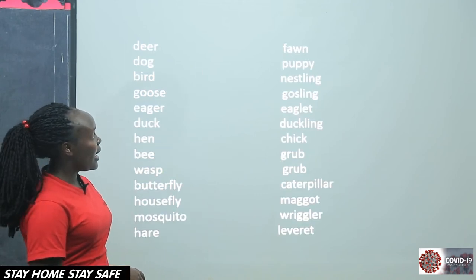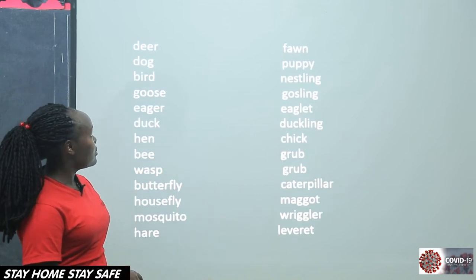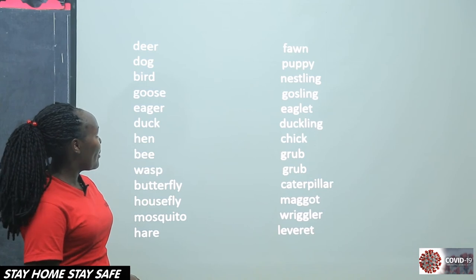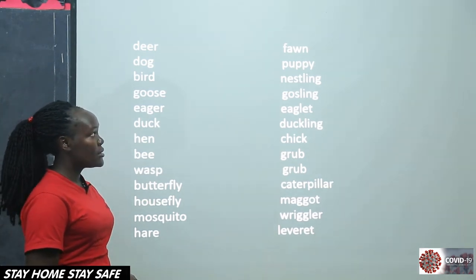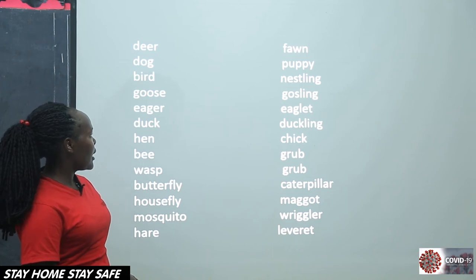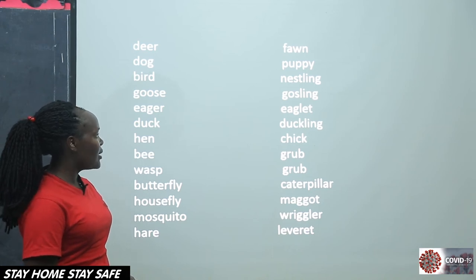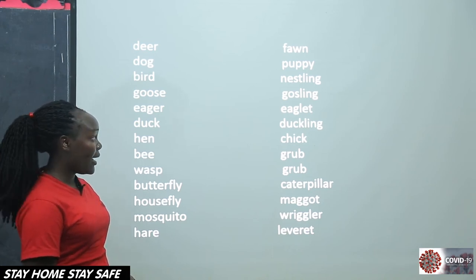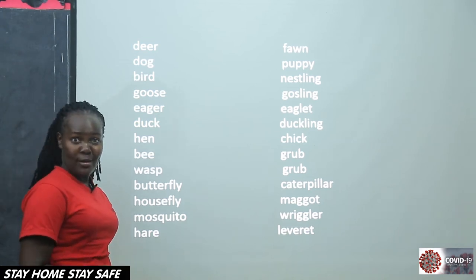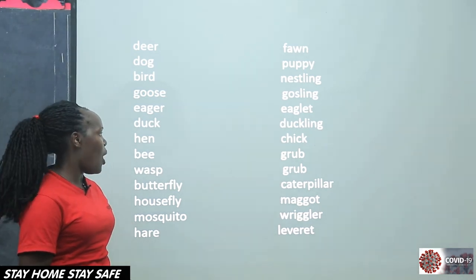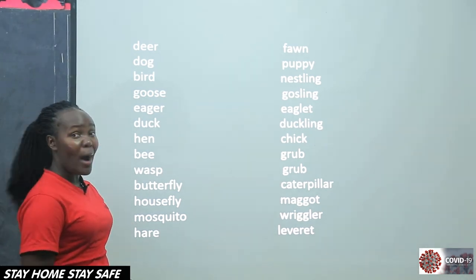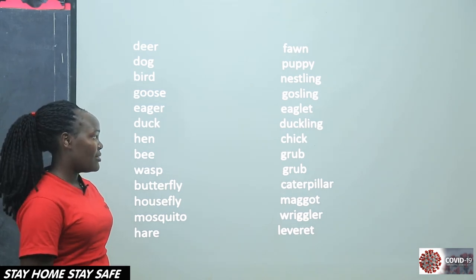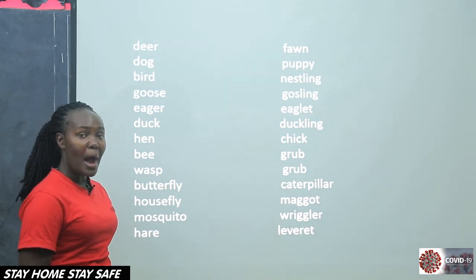We have a deer — it's a fawn. A dog — puppy. Bird — nestling. Goose — gosling. Eagle — eaglet. Duck — duckling. Hen — chick. Many of you have chicks at home. We have a bee and the wasp — they also share. They have a grub.